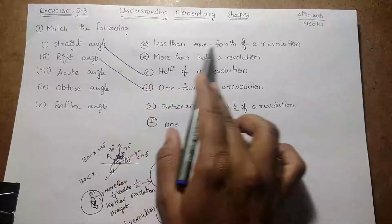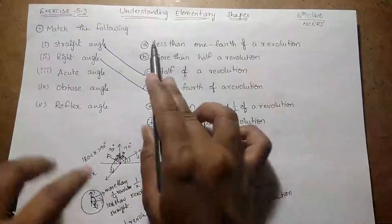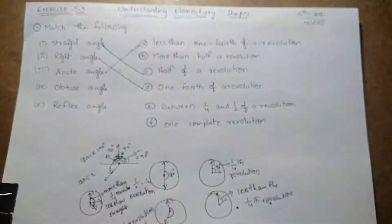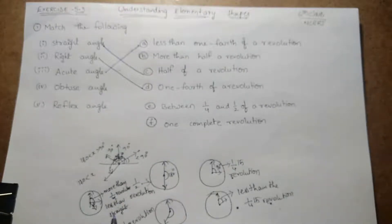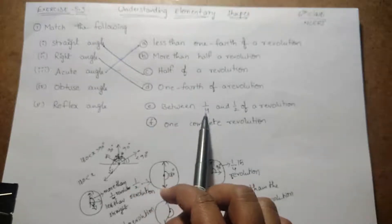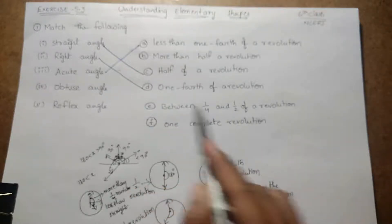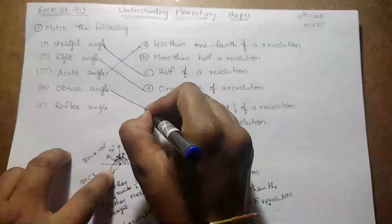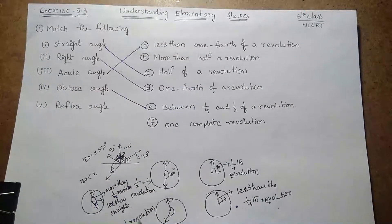Acute angle — less than one-fourth revolution — that is option A. Obtuse angle is more than one-fourth revolution but less than a half revolution, meaning between one-fourth and one-half of a revolution. Reflex angle is more than half revolution — that is the answer.